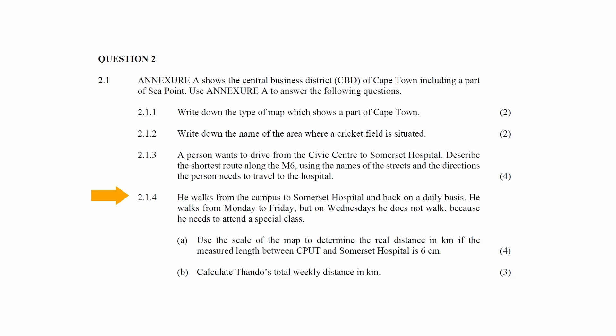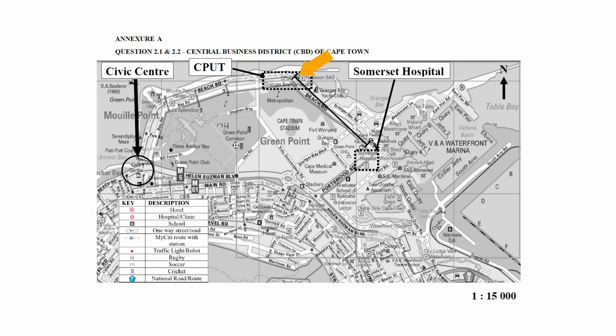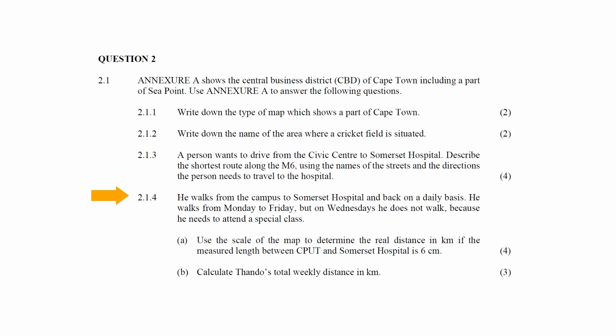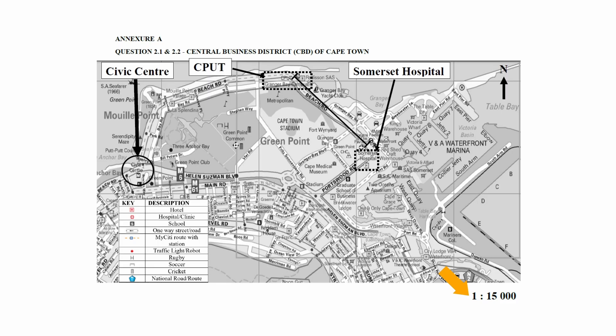In Question 2.1.4 it is stated that a person walks from the CPUT Granger Bay campus to Somerset Hospital and back on a daily basis. He walks from Monday to Friday but on Wednesday he does not walk because he needs to attend a special class. In Question 2.1.4.a, you have to use the scale of the map to determine the real distance in kilometers, given that the measured length between CPUT and Somerset Hospital is six centimeters on the map.